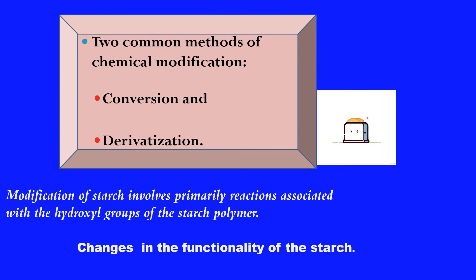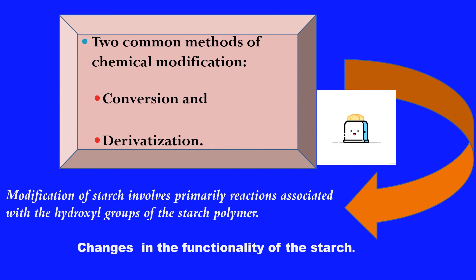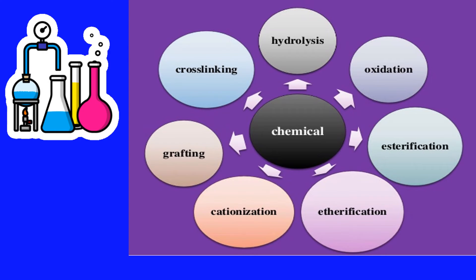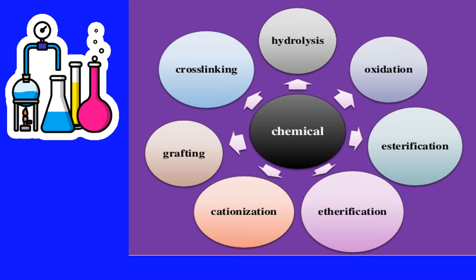Looking at chemical modification techniques, there are two common methods: conversion and derivatization. Modification of starch primarily involves reactions associated with the hydroxyl group of the starch polymer, which can bring about changes in the functionality of starch. Different chemical modification techniques include hydrolysis, oxidation, esterification, etherification, cationization, grafting, and cross-linking.